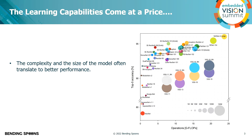For example, if you look at the VGG line here, as we increase the number of parameters and the number of operations — the number of operations is on the x-axis, while the radius of the circle represents the number of parameters — by increasing those, we also increase the accuracy. In general, a bigger, more complex model has better learning capability, yielding higher accuracy.